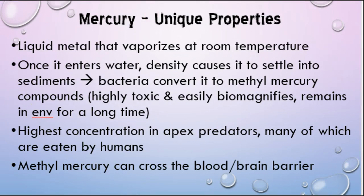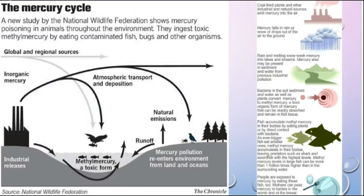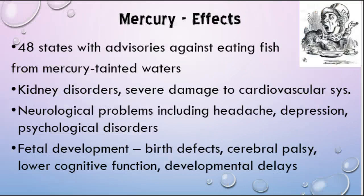Part of the problem with mercury is that it is the only metal that's a liquid at room temperature, and it vaporizes very easily at room temperature as well. Because it vaporizes, much like those POPs, it gets into the water very easily when it rains. Once it enters the water, its density makes it settle in the sediments on the bottom, where bacteria convert it to methyl mercury — a very toxic compound that biomagnifies easily and is very persistent in the environment. It builds up in apex predators, a lot of which we eat, like tuna and mackerel. The problem with methyl mercury is that it can actually cross the blood-brain barrier, which most materials cannot, and this is responsible for many of its toxic effects, including severe kidney disorders, cardiovascular damage, major neurological problems, psychological disorders, and fetal development and birth defect disorders.